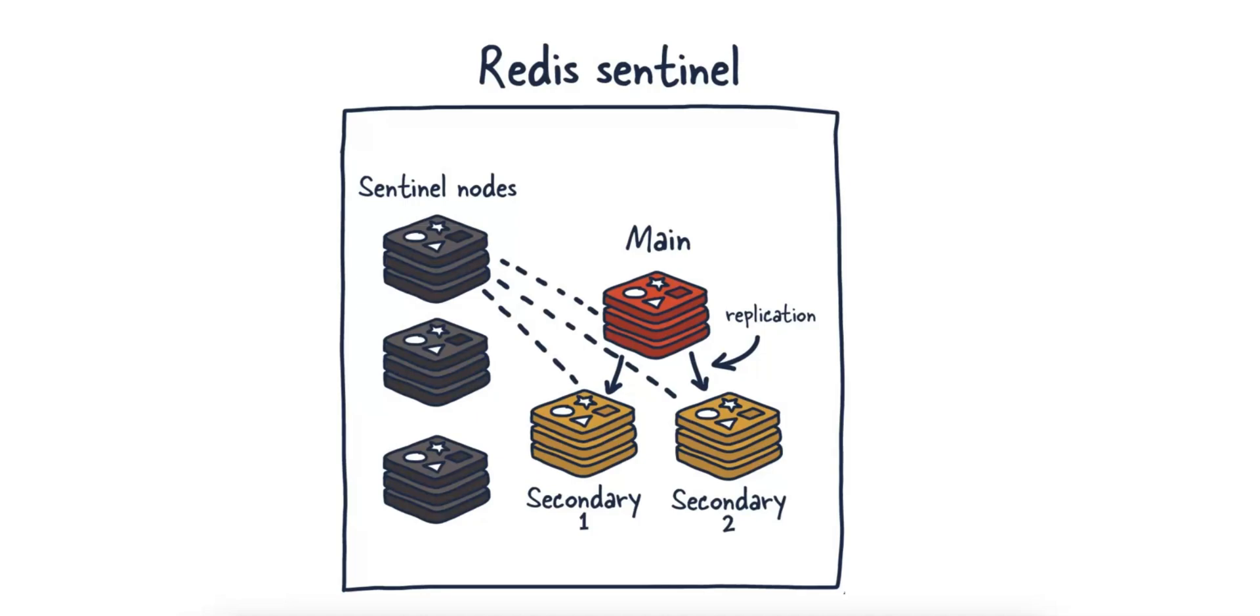There are two additional points I want to mention. The first point is about failure detection. If the master becomes unavailable, each Sentinel node detects it via a ping timeout. A Sentinel node does not act alone. It requires the majority of the Sentinel nodes, usually called a quorum, to agree that the master is down. This prevents false positives due to temporary network issues.